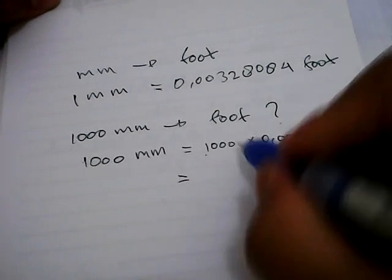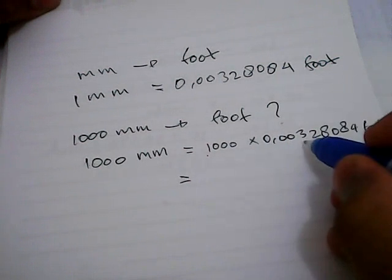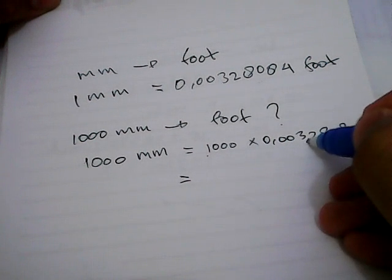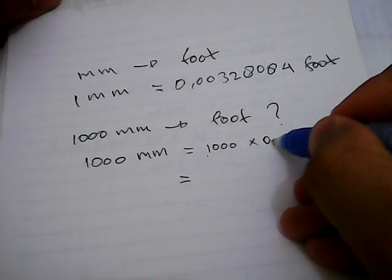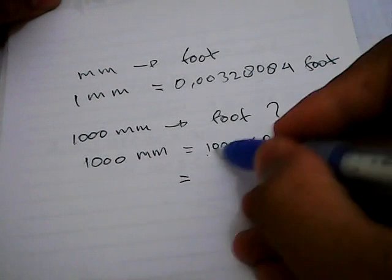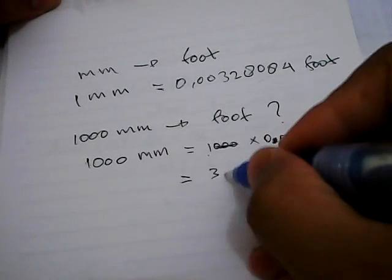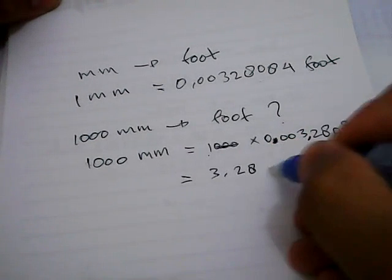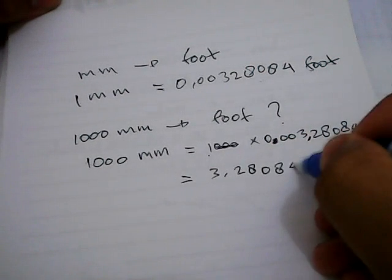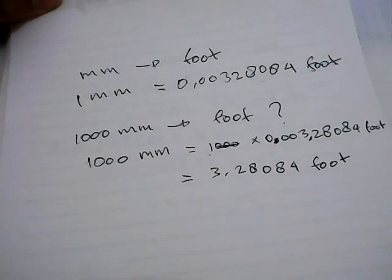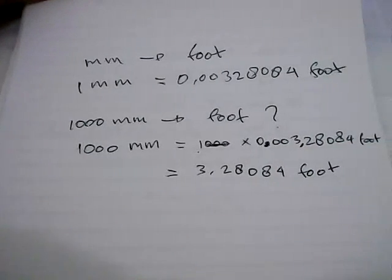Well, the result is we have three zeros, so we just need to move the comma over here. Okay, the result is 3.28084 foot. Well, that's it, that's the result of our equation problem.